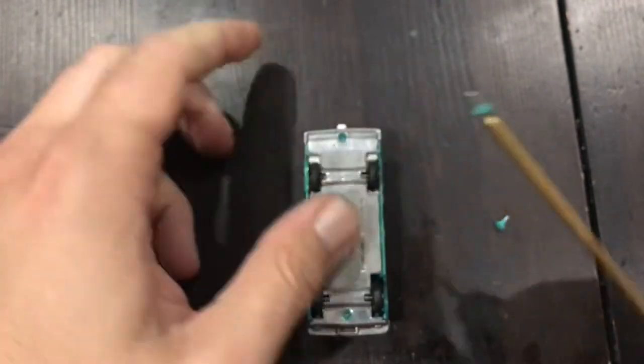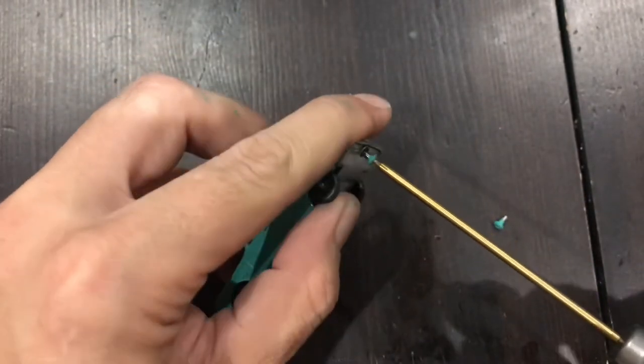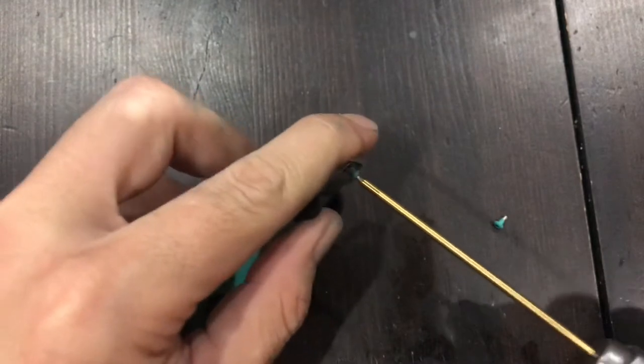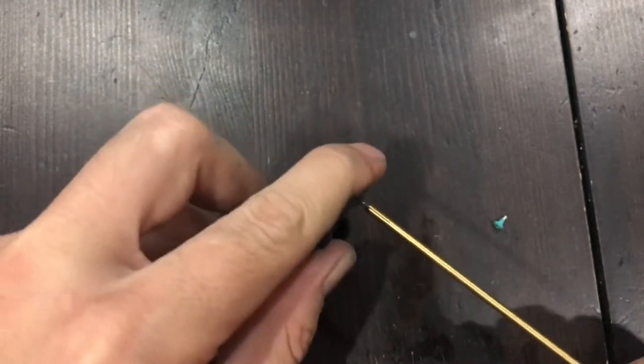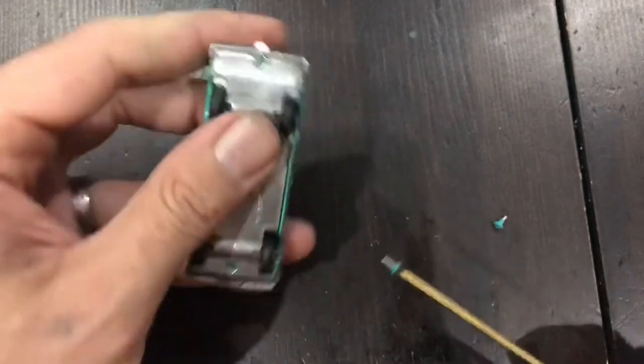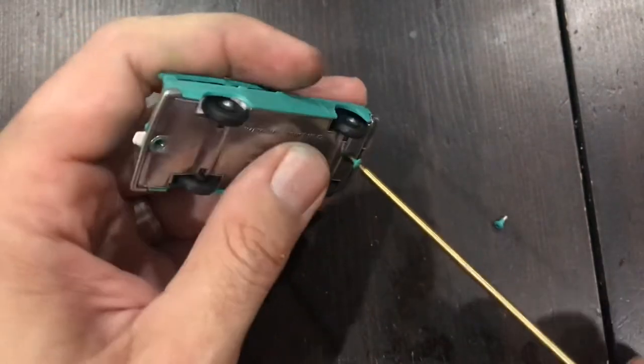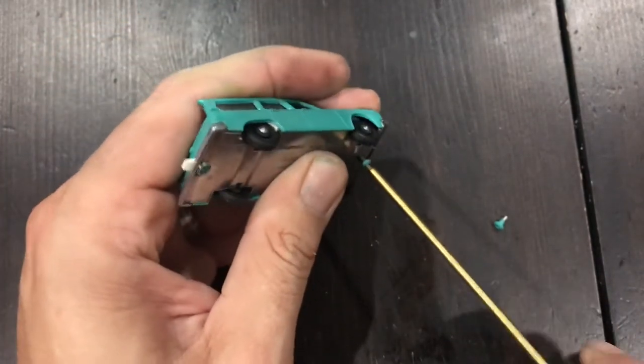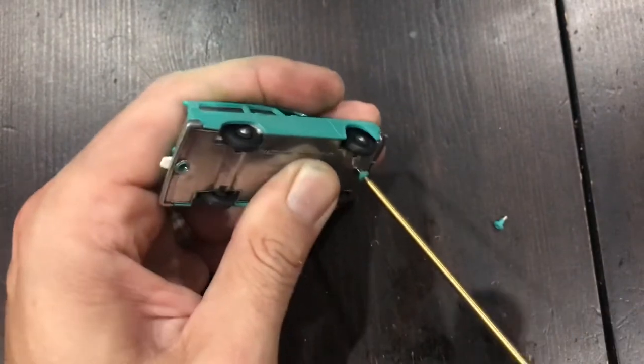I always put the screws in before I paint. One, it helps keep the threads clear of any overspray or paint. And two, it really looks nice. It looks close to the original rivets on most models. And I'm going to make sure I get the right screw back in the right hole because they are different lengths.